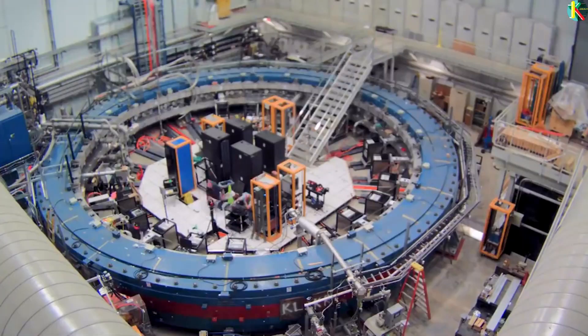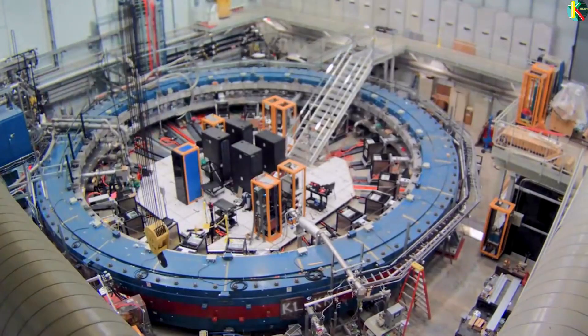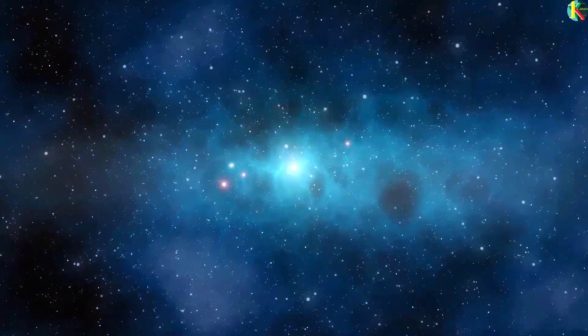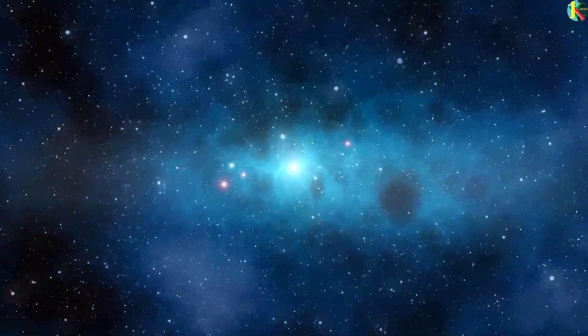As they decay the muons spit out positrons that are detected by calorimeters lining the inner circumference of the ring. Inside the ring the 1.45 tesla magnetic field that keeps the muons travelling in a circle also provides the magnetic torque that causes spin precession.